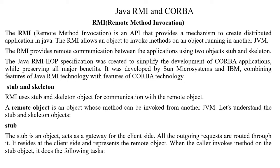So what is RMI? There are two intermediate objects which we call stub and skeleton. The Java RMI-IIOP specification was created to simplify the development of CORBA applications while preserving all major benefits.